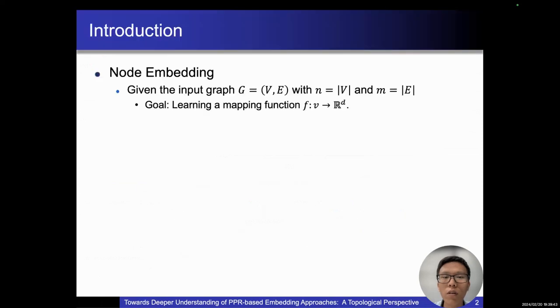Given a graph G with N nodes and M edges, node embedding aims to map nodes in the original graph into d-dimensional representations.